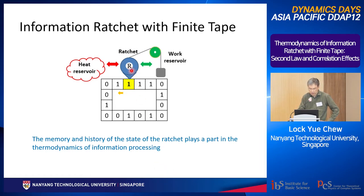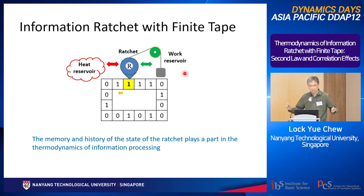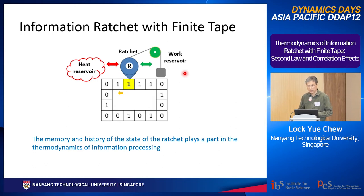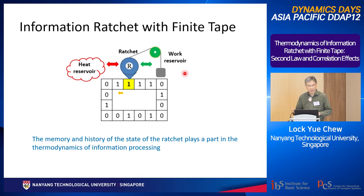The Mandel and Jasinski information ratchet is continuous time, while the one by Boyd and Crutchfield is discrete time. In an information ratchet, the ratchet mediates energy transfer between the heat reservoir and the work reservoir. In the cases covered by those two groups, the tape itself is infinite — that is the information reservoir. Normally we cannot extract work from one heat bath because that would violate the second law. By having an information reservoir we can dump the entropy into it and thereby extract work from one heat bath. That is the key idea.